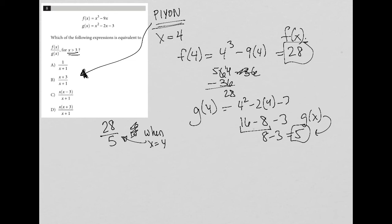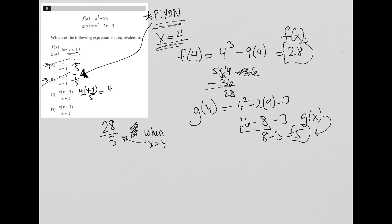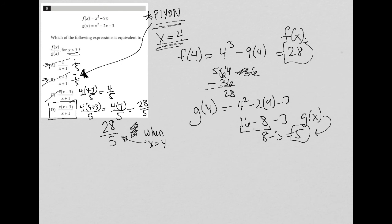The last step is to plug x = 4 into the answer choices until we find the one that gives 28/5. Choice A gives 1/5 — not it. Choice B gives 7/5 — not it. Choice C gives 4(4 - 3)/5 = 4/5 — not it either. For choice D, I get 4(4 + 3)/(4 + 1) = 4 × 7 / 5 = 28/5. That matches, confirming choice D is the answer.